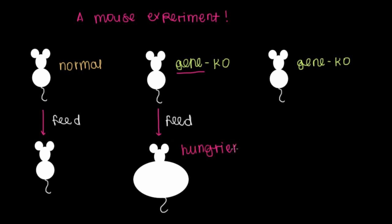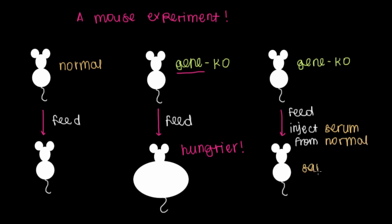But then the unusual thing was that when they took this same strain of mouse that had this exact same gene knocked out and fed them but also injected the serum from the normal mouse, they found that over time the mouse looked pretty much the same as the normal mouse.